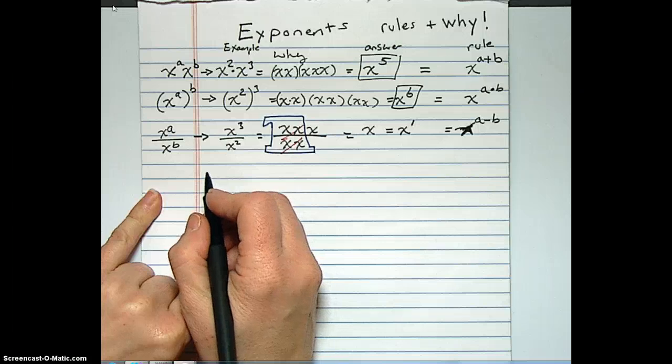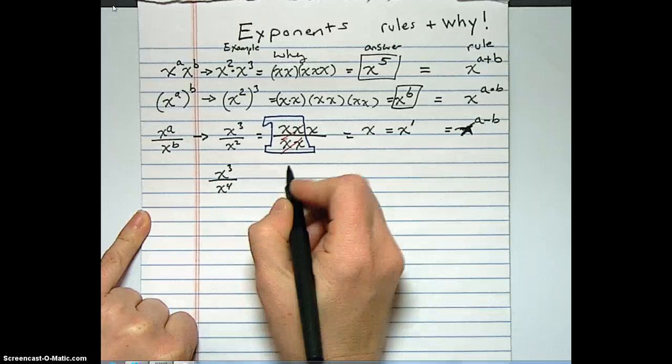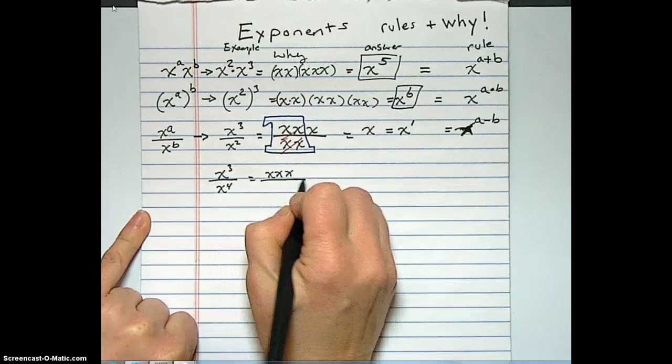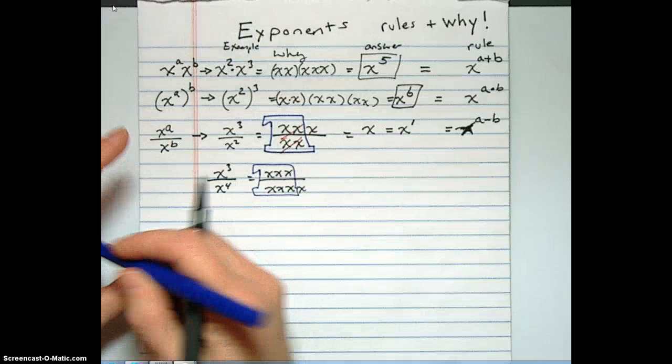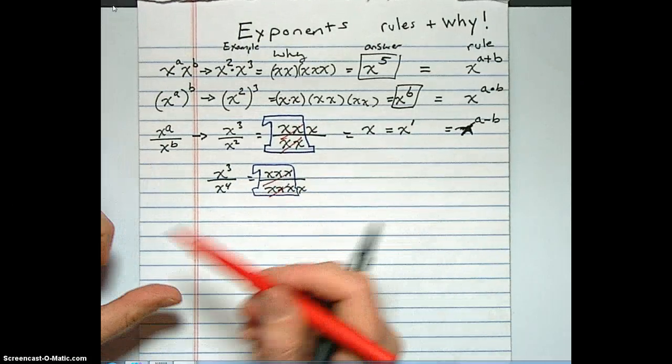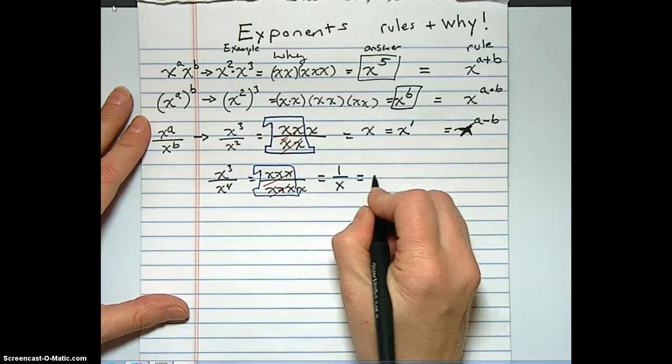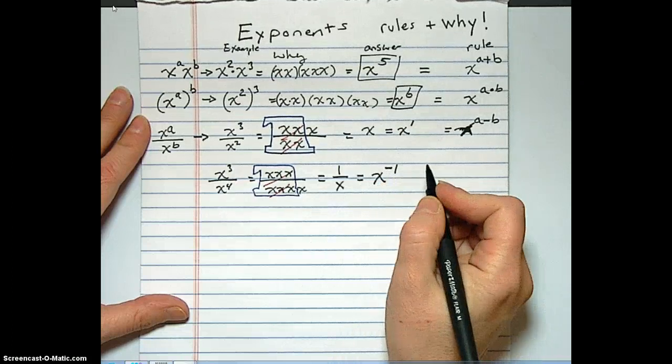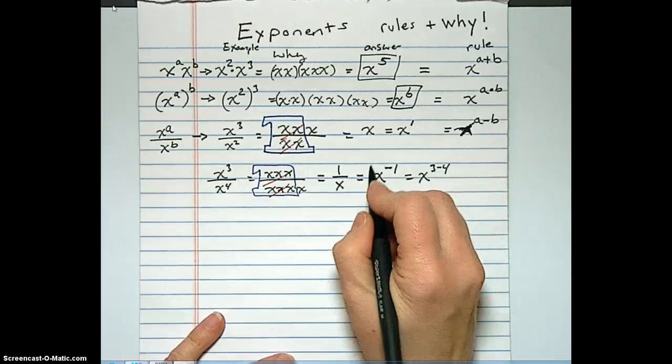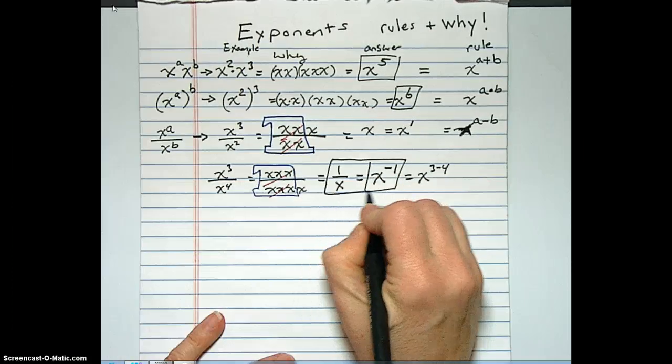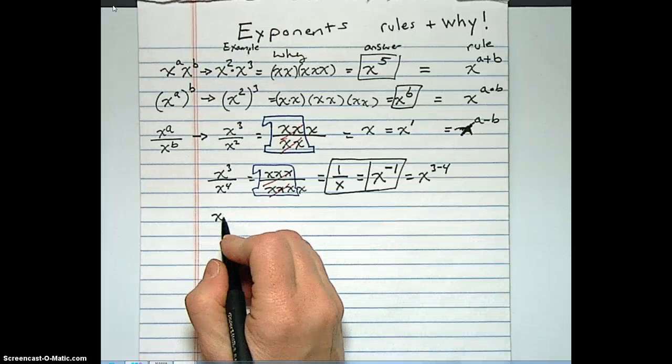All right, so next, let's look at another example like this. Let's look at something that might be new to some of you all, x to the third over x to the fourth. We get three x's on the top, four x's on the bottom. These guys cancel out. Okay, they're all gone. And we end up with one over x. And what might be new to some of you all is that you can write this as x to the negative one, okay? And that makes the rule follow through. This is x to the three minus four.